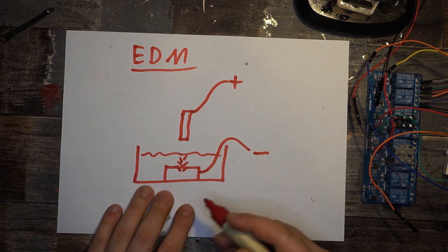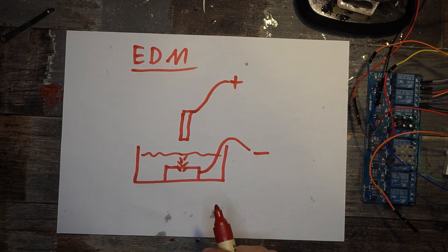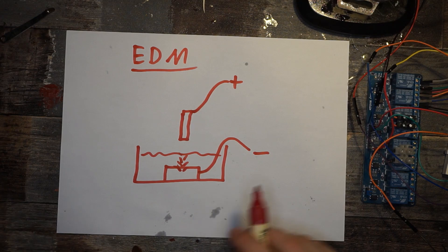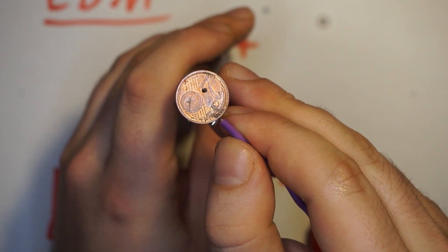And this basically allows you to drill through almost anything. I made a little crappy test setup from some trash I had lying around and was able to drill through this—this is a euro cent with a hole in it.